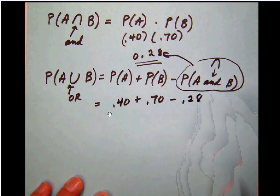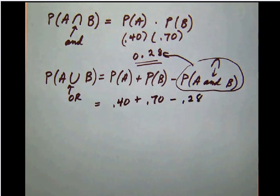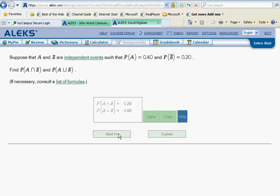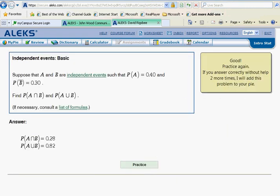That's what we got back up here, so we're simply going to subtract off that 0.28. We'll pop back to our ALEKS calculator and use the calculating functions to do that. We'll have our 0.40 plus our 0.70 and subtract off 0.28. That answer is 0.82. Let's put that into ALEKS and check.